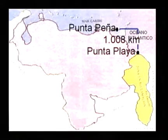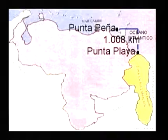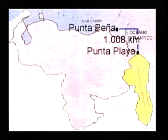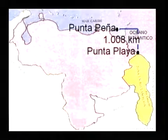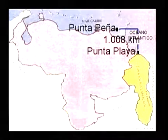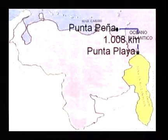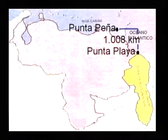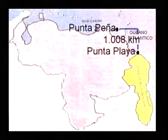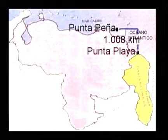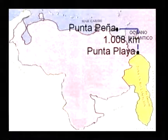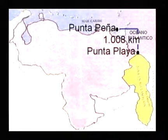Recuerda que hacia el este limitamos con el océano Atlántico. Por lo tanto, vamos a tener una longitud tomando desde el punto de Punta Peña hasta Punta Playa de 1.008 kilómetros. Quiere decir entonces que tenemos de costa oceánica 1.008 kilómetros de longitud.